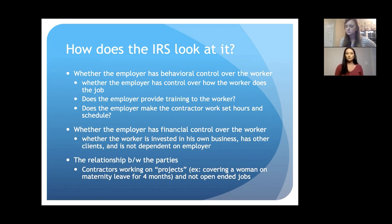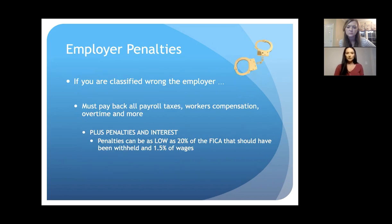The IRS also looks at the relationship between the parties — is the contractor working on a project? For example, covering for someone on maternity leave for four months would be your project. It's not an indefinite term like an employee. If you're classified wrong, the IRS might make the employer pay back payroll taxes, workers' compensation, overtime, and other things — plus penalties and interest. Penalties can be as low as 20% of the FICA that should have been withheld and 1.5% of wages.